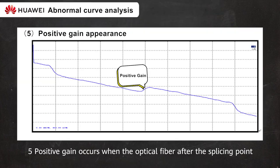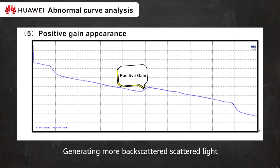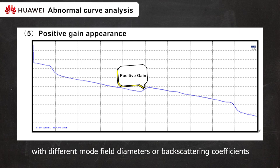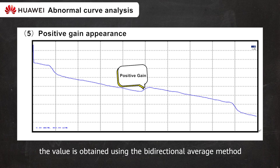5. Positive gain occurs when the optical fiber after the splicing point is larger than the optical fiber before the splicing point, generating more backscattered light. It is often found at the fusion splicing points of fibers with different mode field diameters or backscattering coefficients. Actually, the splicing point has loss, and the value is generally obtained using the bi-directional average method.